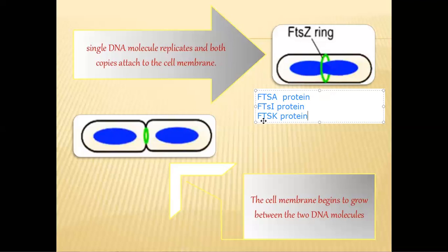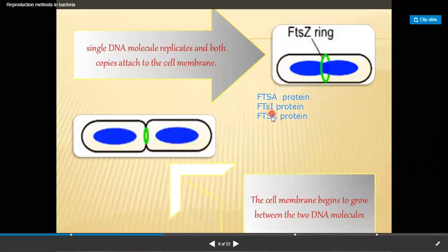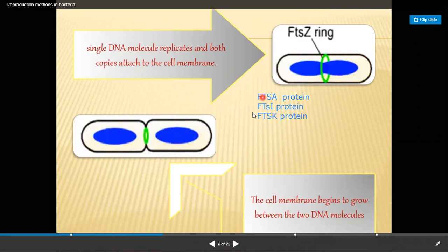And what is the role of the FtsI protein? And FtsK protein — FtsK protein actually separates the chromosomes. We can see that FtsZ, FtsA, FtsI, and FtsK have a major role in cell division, forming a septum-like structure during cell division. We call them divisome proteins — FtsZ, FtsA, FtsI, and FtsK proteins are the divisome proteins.